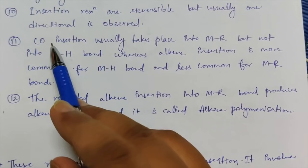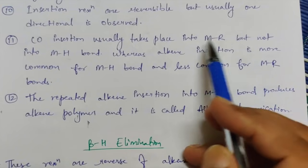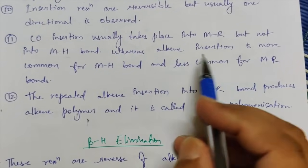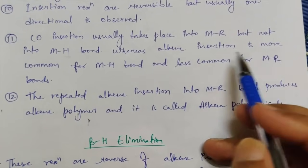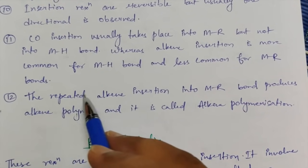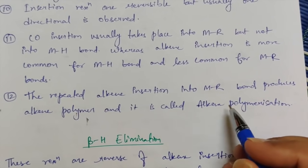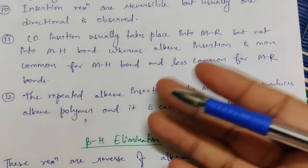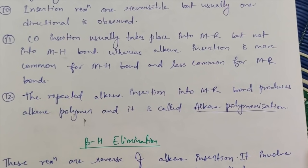Point eleven: CO insertion or 1,1 migratory insertion usually takes place into a metal-alkyl (M-R) bond but not into a metal-hydride (M-H) bond, whereas alkene insertion or 1,2 migratory insertion is more common for metal-hydride bonds and less common for metal-alkyl bonds. The last point: repeated alkyl insertion into a M-R bond produces an alkyl polymer — this is called alkyl polymerization.